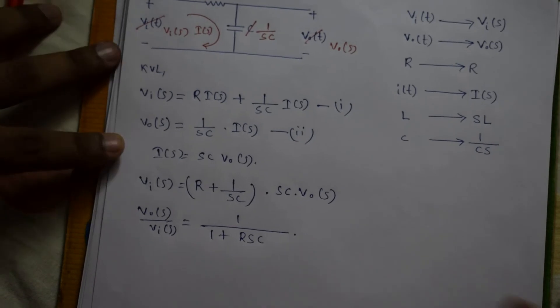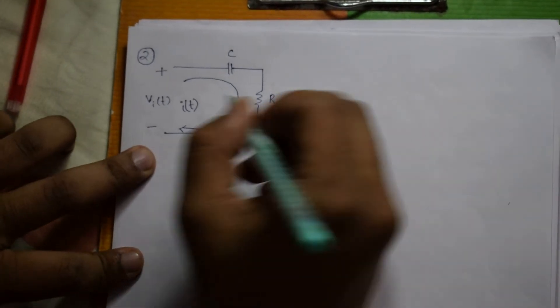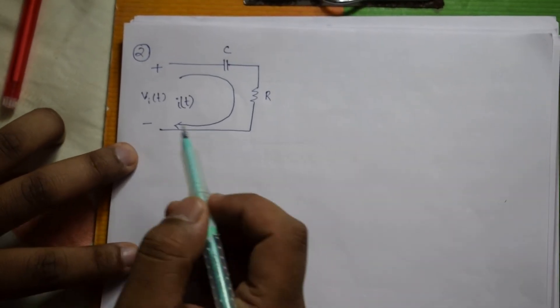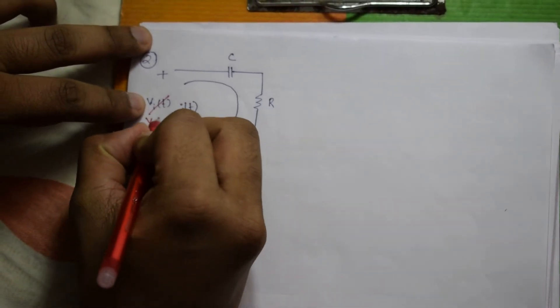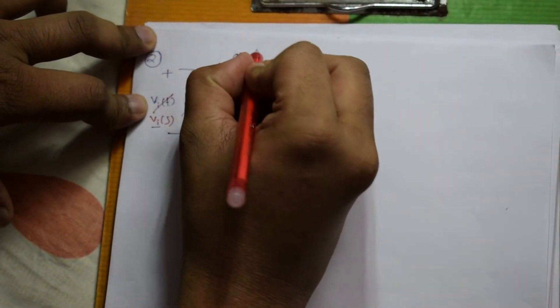Now let us take one more example. Here also we have to do the same thing. We need to convert all the parameters into Laplace domain. So for that, Vi(t) is Vi(S), it is I(S), and C is 1 by SC.